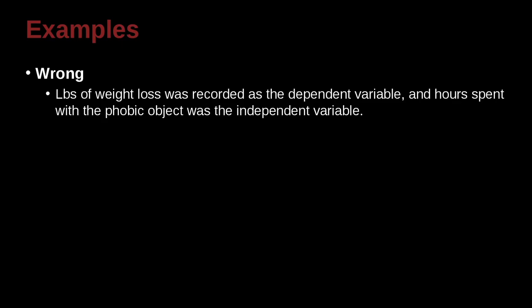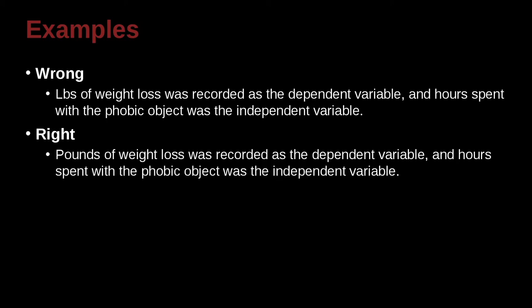Here's another example. Pounds of weight loss was recorded as a dependent variable, and hours spent with the phobic object was the independent variable. And of course, what we've done here is the abbreviation pounds. So you may be talking about pounds that are inside your table, but you cannot abbreviate at the beginning. You have to write it out at the beginning of the sentence. Remember, we covered that in a previous unit.